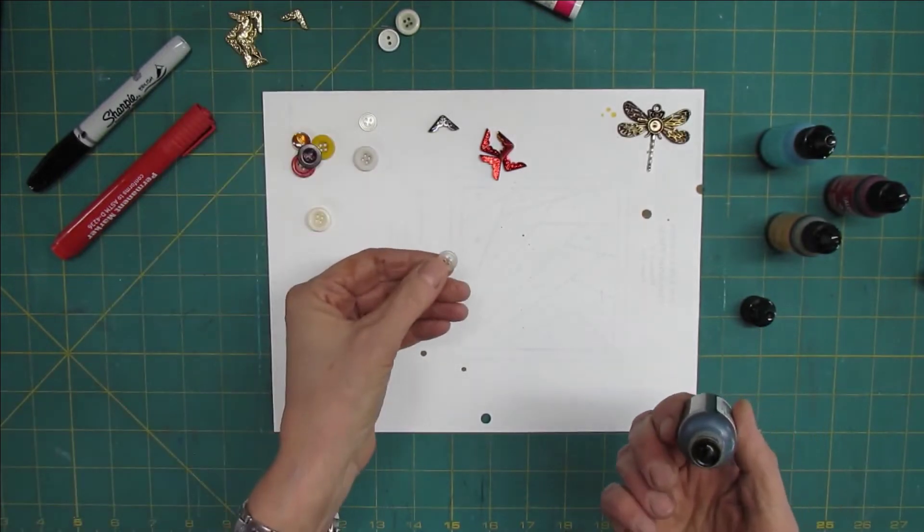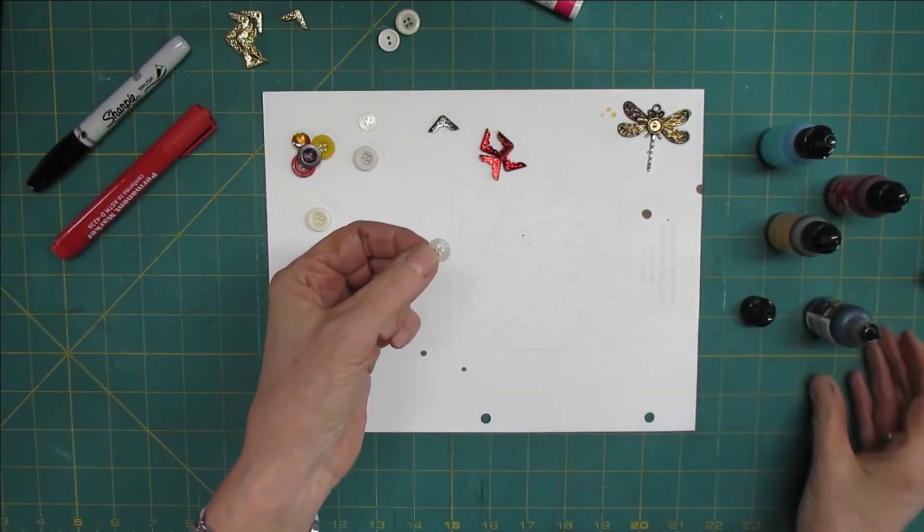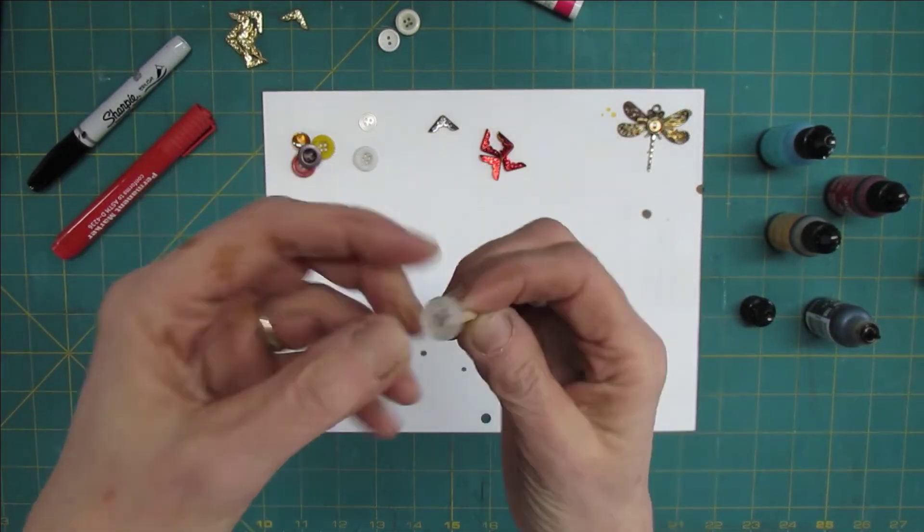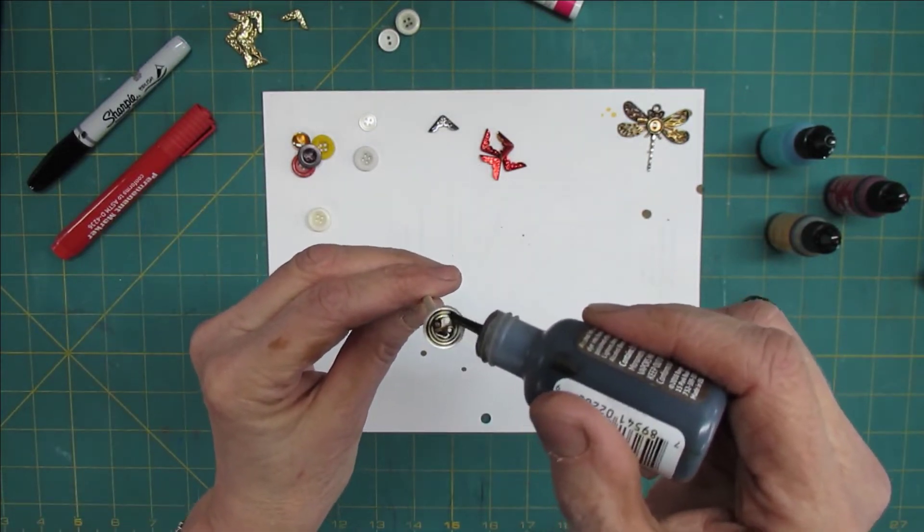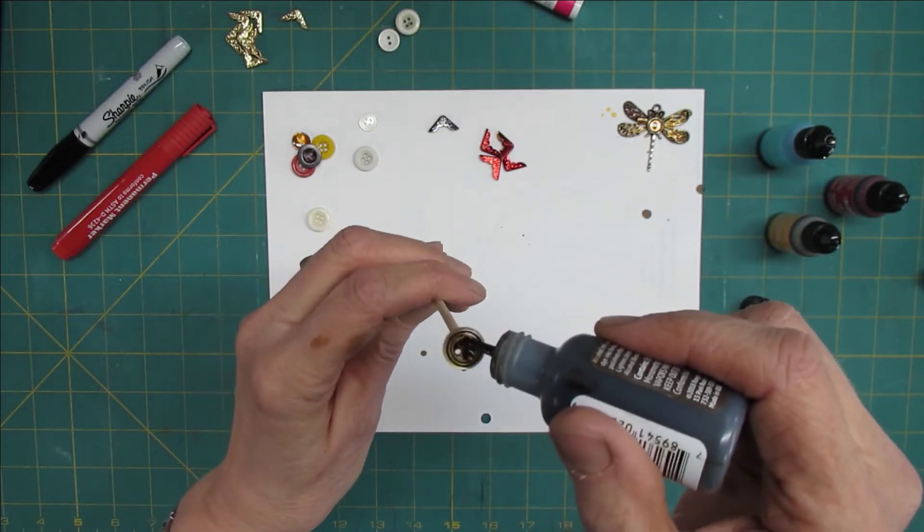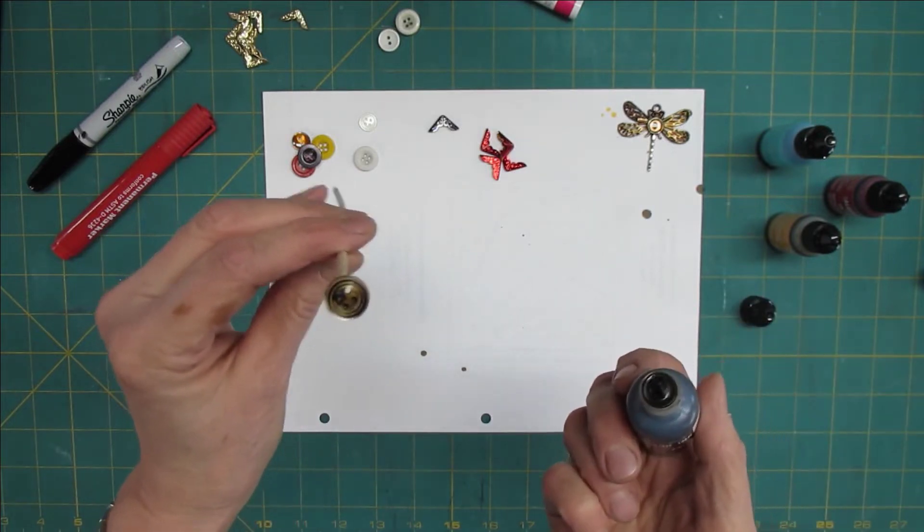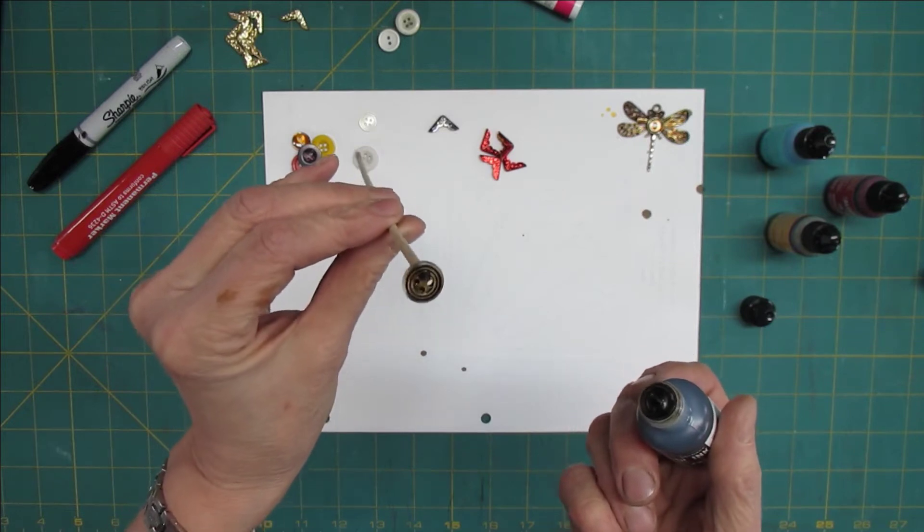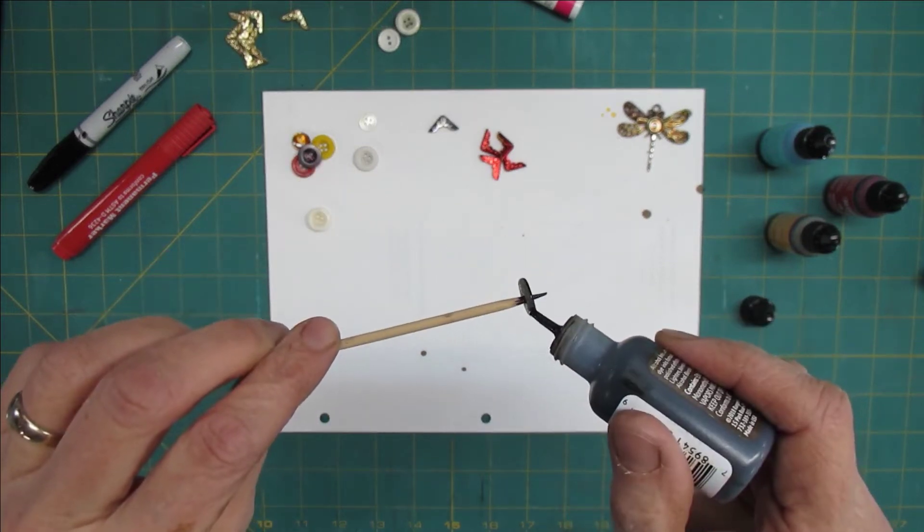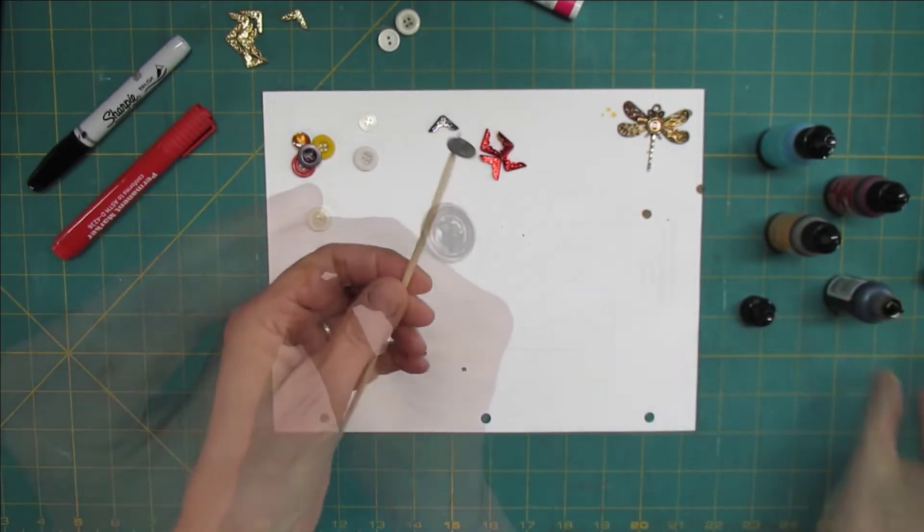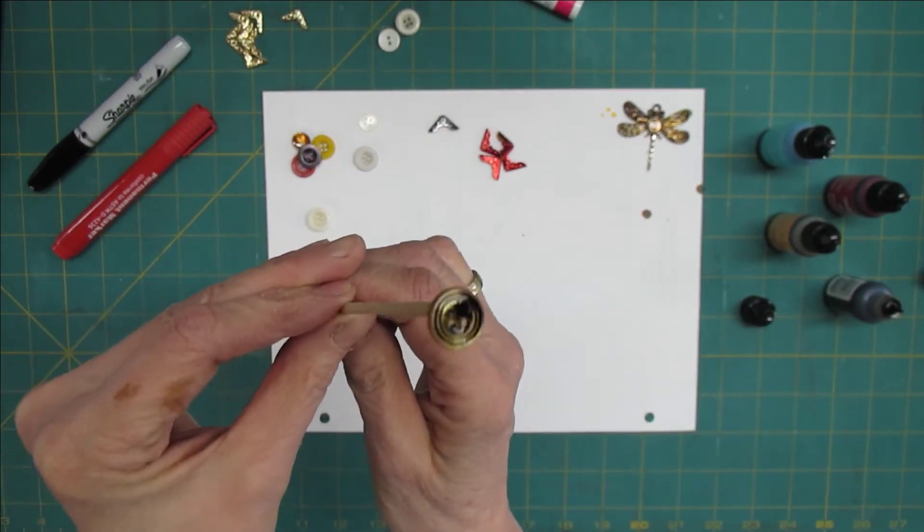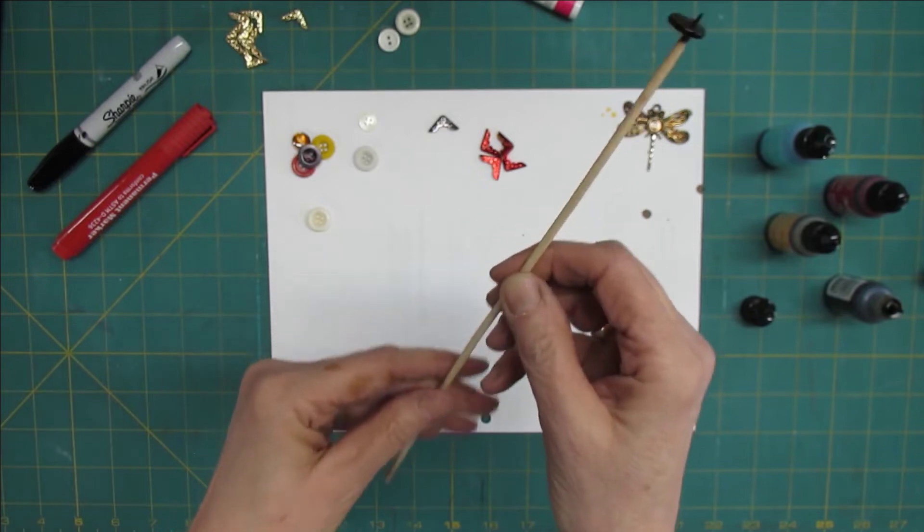And the same thing applies for a button. I'll get a skewer and I push it into one of the buttonholes, and I just pour the ink right on top. The thing with this is, this ink goes to the lowest spots, so you have to kind of keep it rotating. Otherwise you only have ink on certain spots and not on other spots.